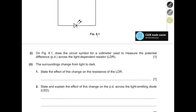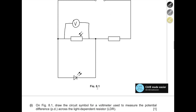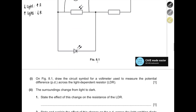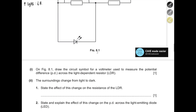The surroundings change from light to dark. State the effect on the resistance of the LDR. A key rule for LDR is: when there is less light, there is more resistance; when there is more light, there is low resistance. Over here, light has reduced, so resistance has increased.